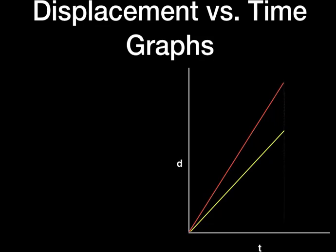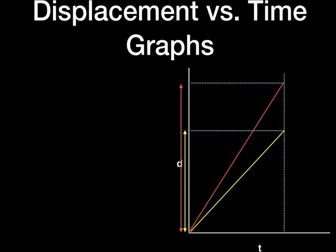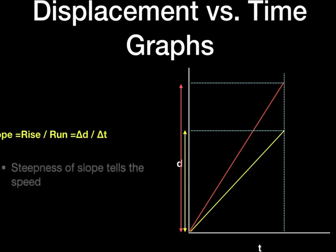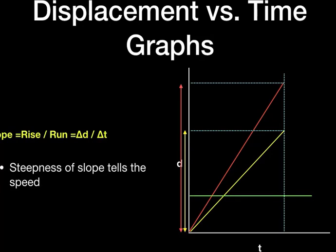If we consider both objects at one specific point in time, we can see that the yellow one would have traveled one distance while the red one would have traveled a different distance. The slope is the rise divided by the run. In this case, the rise is the change in distance on the y-axis and the run is the change in time on the x-axis. The slope tells us how fast the object is going — the red line is steeper, indicating higher speed. A horizontal line indicates a slope of zero, meaning the object is not traveling at all.